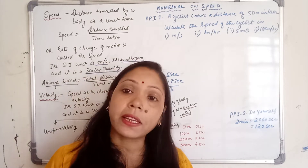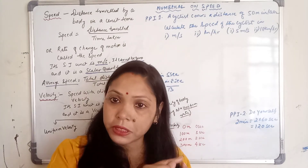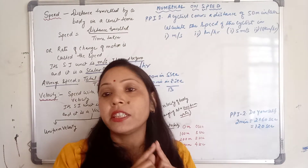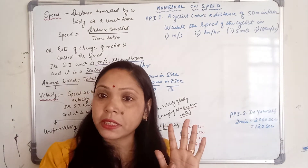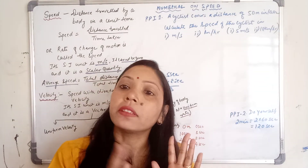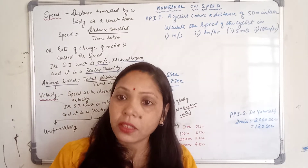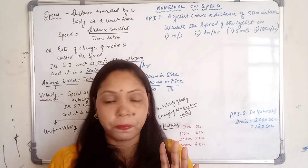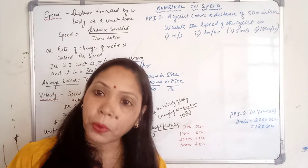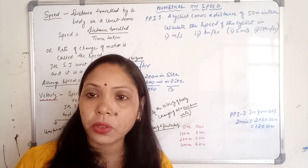We know that displacement can be zero. Whenever the body comes back to the original position, displacement is zero. Suppose a body starts from point A and comes back to point A — on that time the displacement will be zero. If the displacement is zero, then your velocity is also zero. And it is a vector quantity, because here we are considering both magnitude and direction. So velocity is a vector quantity.